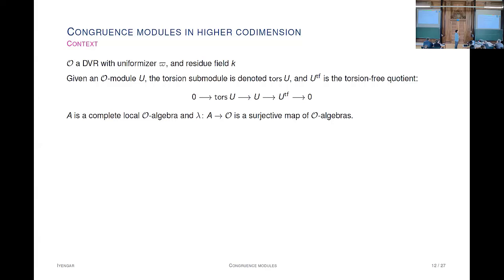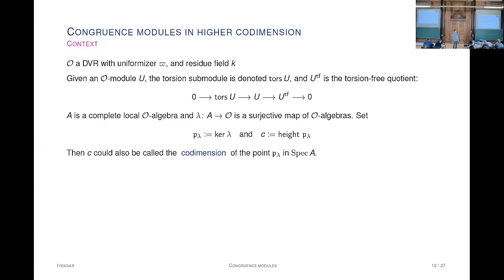We have a complete local A-algebra and you're fixing an augmentation lambda to O. I'll write P for the kernel of the augmentation, subscript lambda. And C will be the height of P_lambda—C is also the codimension of the point P in Spec R, which is why the paper is titled 'The Congruence Module in Higher Codimensions.' The classical case is C equal to zero, but I'm not imposing any such constraint here.